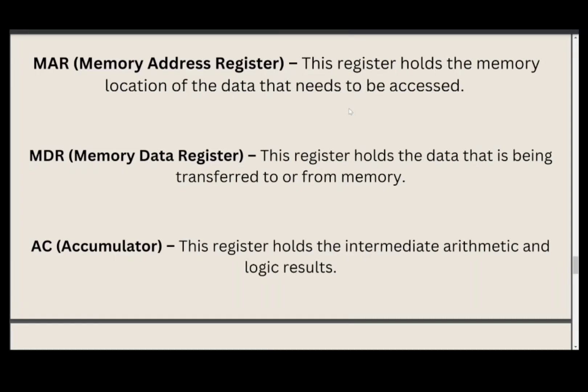The Memory Data Register (MDR) stores the data being transferred to or from memory. It acts as a buffer between the CPU and memory, allowing the CPU to quickly access and manipulate data without constantly retrieving it from memory. The MDR holds the data temporarily until it is needed by the CPU or returned to memory, and it helps improve efficiency by reducing the number of memory cycles required to read or write data.